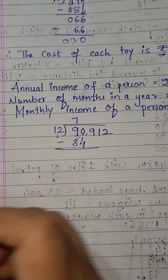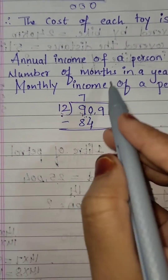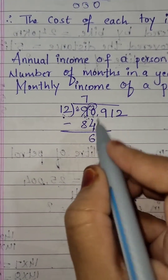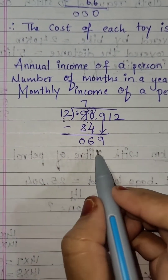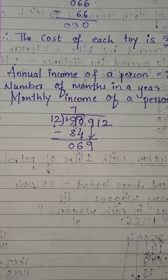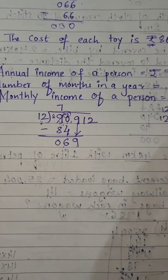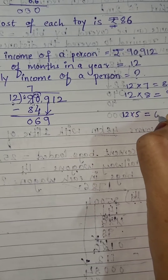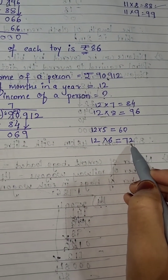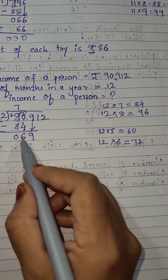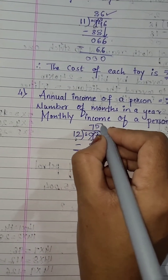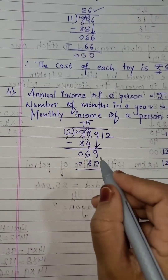Bring down the next number 9 — it becomes 69. Read the 12 table till you get 69: 12×5=60, 12×6=72. Since 69 lies between 60 and 72, and 72 is bigger than 69, take the lesser number 60. So 12×5=60. Subtract: 9 minus 0 is 9, 6 minus 6 is 0, and 0 minus 0 is 0.